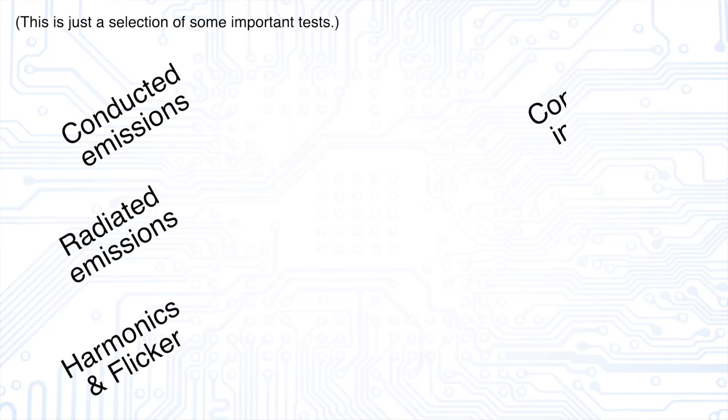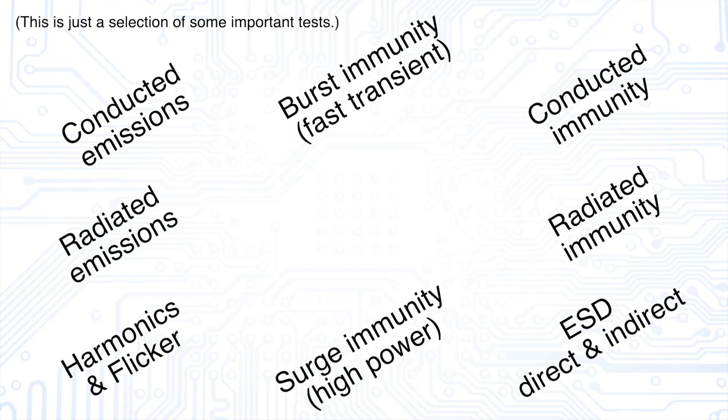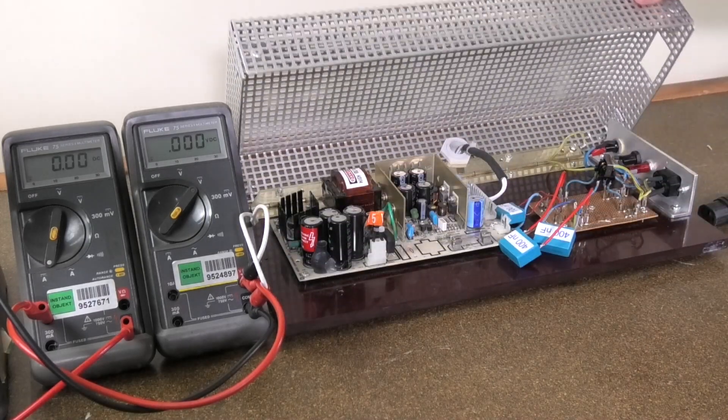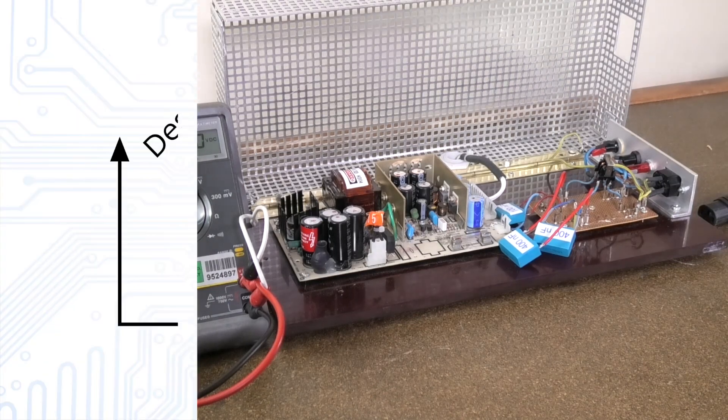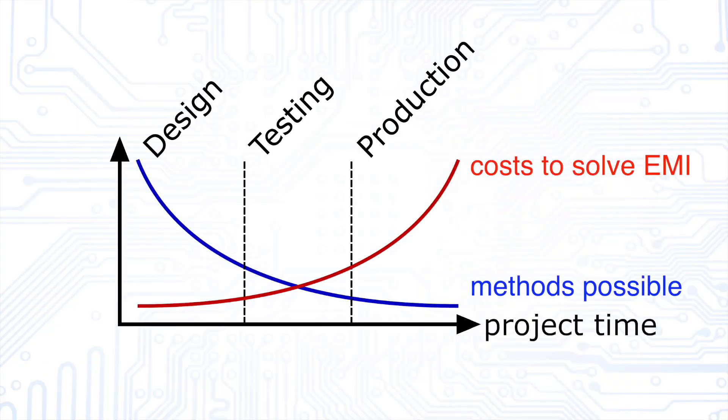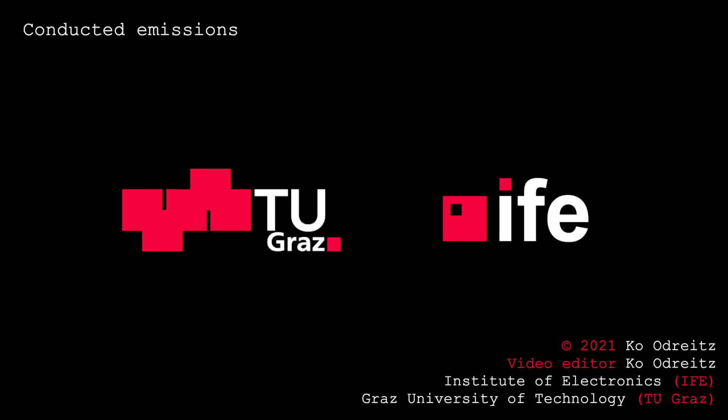Many additional measurements are required before our product is considered electromagnetically compatible. The use of filters before selling the product should also be more of an emergency solution. If the product is designed with EMC in mind from the beginning, this really saves a lot of time and cost for possible troubleshooting.